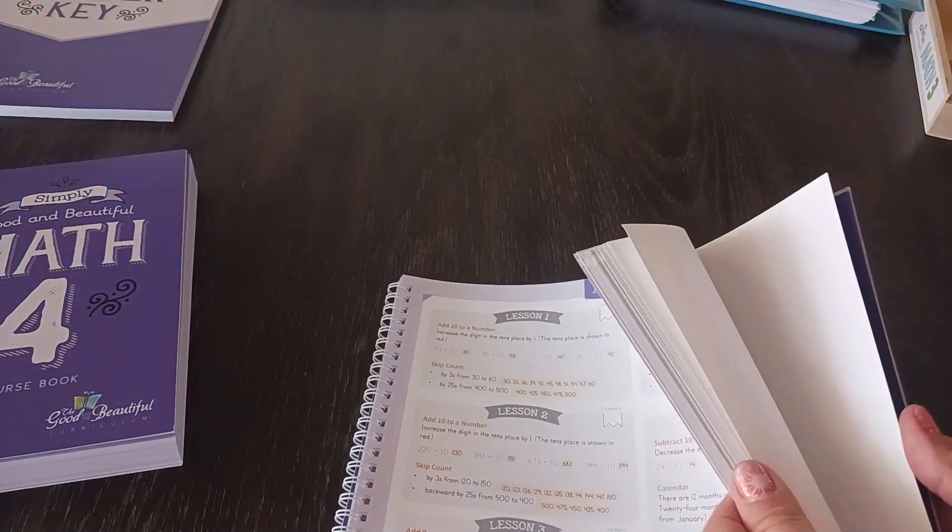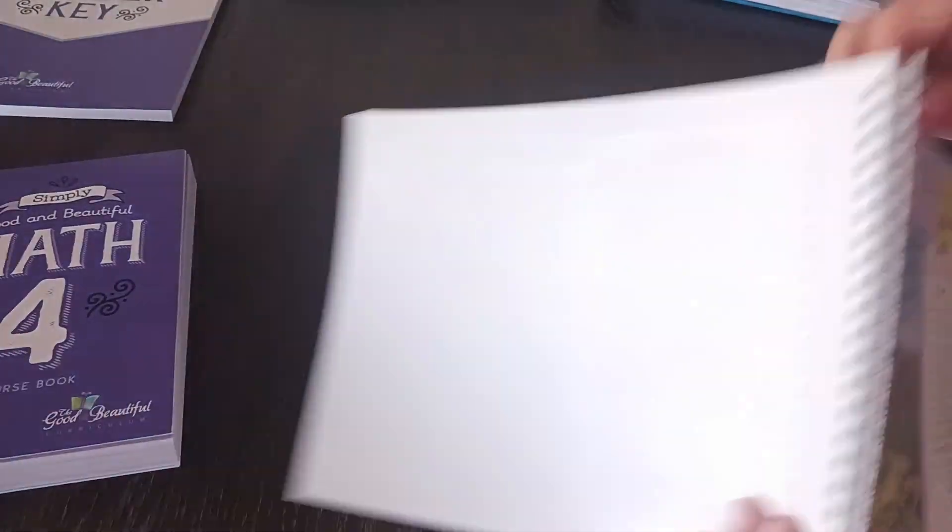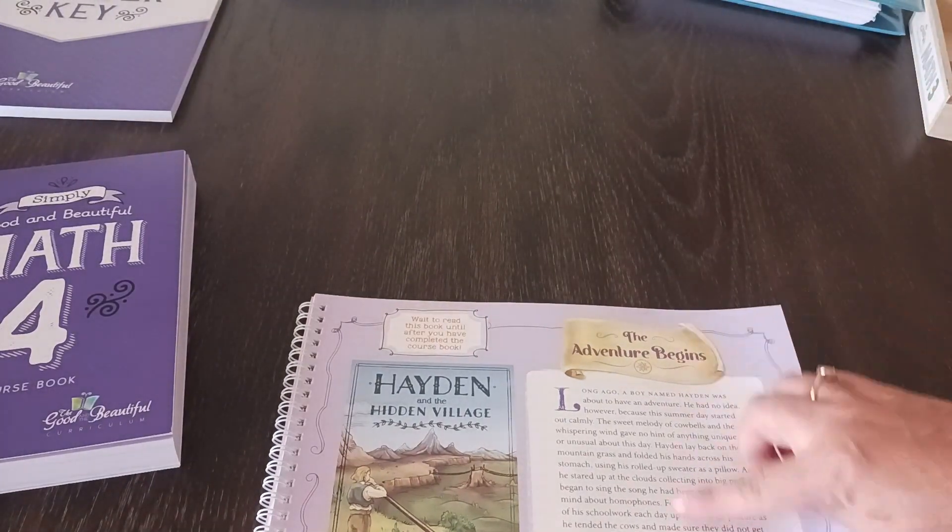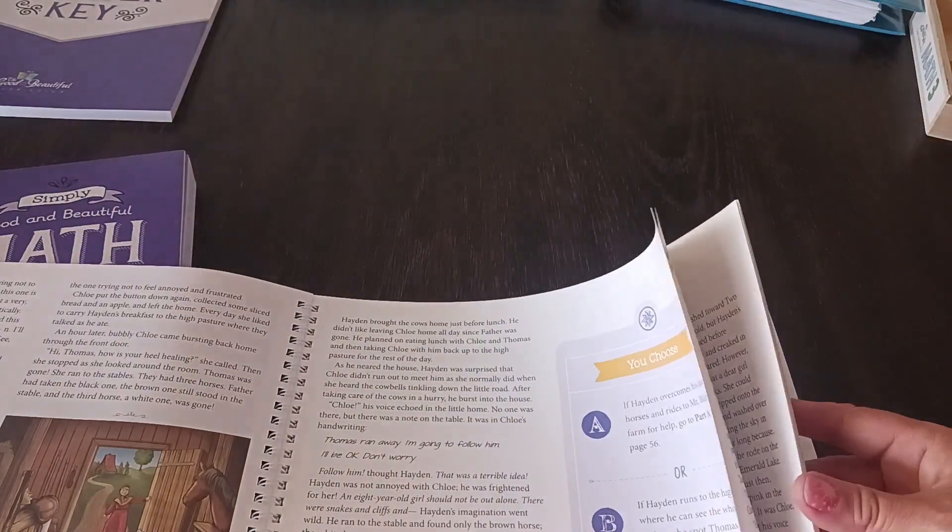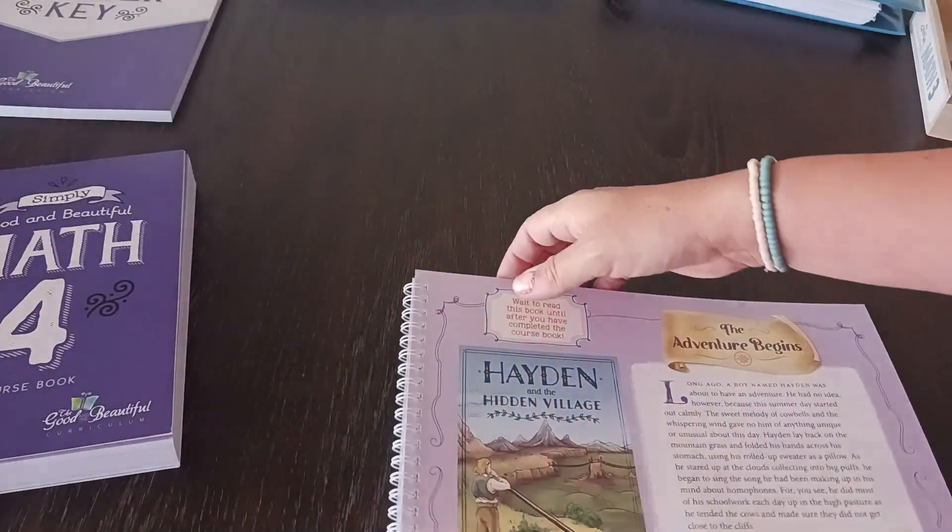Oh, I forgot to show you. So at the back of the book, there is a story. Okay, hold on. Let me get to it real quick. Okay. So when she finishes, she gets to read this book in the back and there are stickers also in the back of the book that she gets to use on a different part in this book. And that is that book.